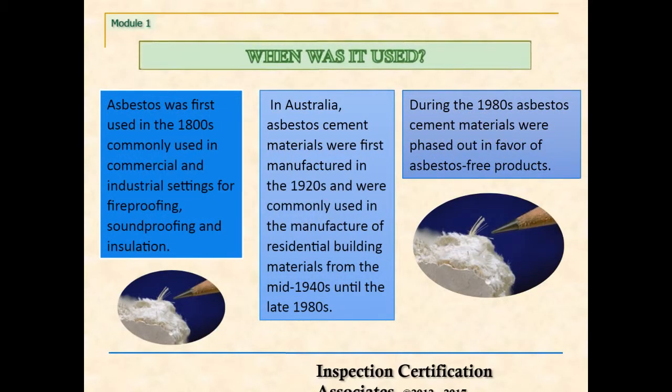When was asbestos used? Asbestos was first used in the 1800s, commonly used in commercial and industrial settings for fireproofing, soundproofing, and insulation. In Australia, asbestos cement materials were first manufactured in the 1920s and were commonly used in the manufacture of residential building materials from the mid-1940s until the late 1980s.